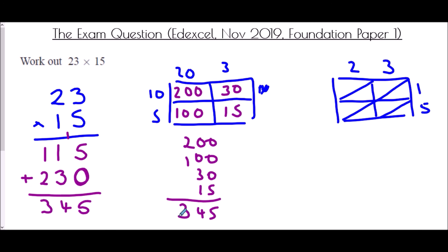And finally with Napier's bones for 23 times 15: 2 times 1 is 2, so 0 and 2; 3 times 1 is 3, so 0 and 3; 2 times 5 is 10; and 3 times 5 is 15. Reading the diagonals: the final one is 5; the next is 3 plus 1 equals 4; and 0 plus 2 plus 1 is 3. So the answer is 345.